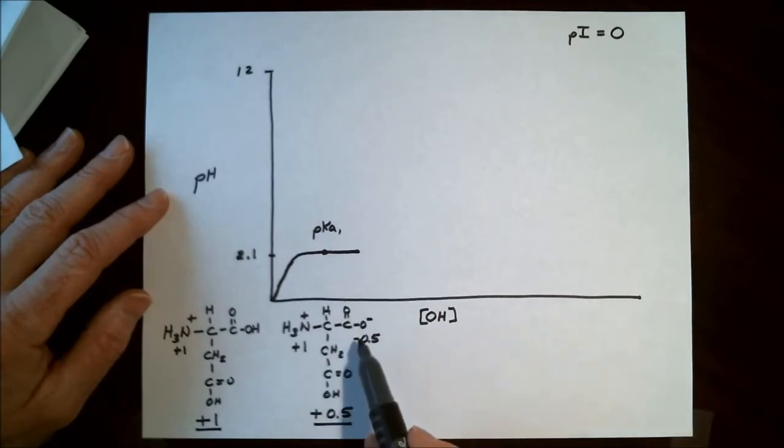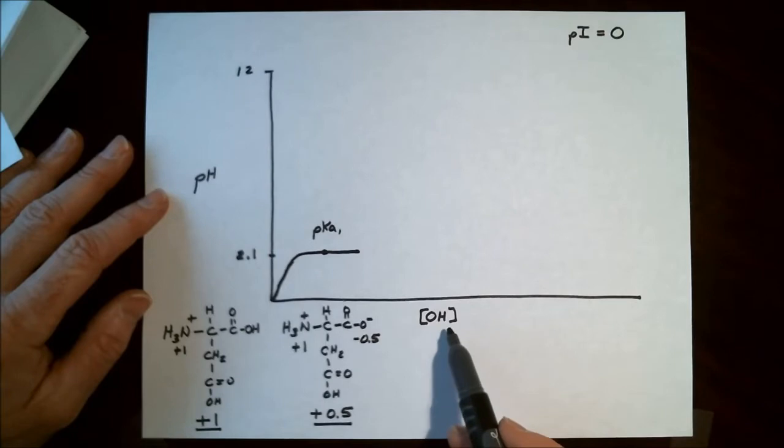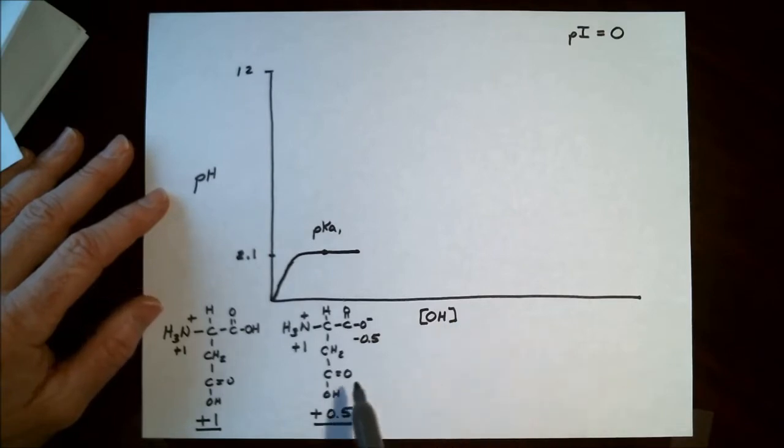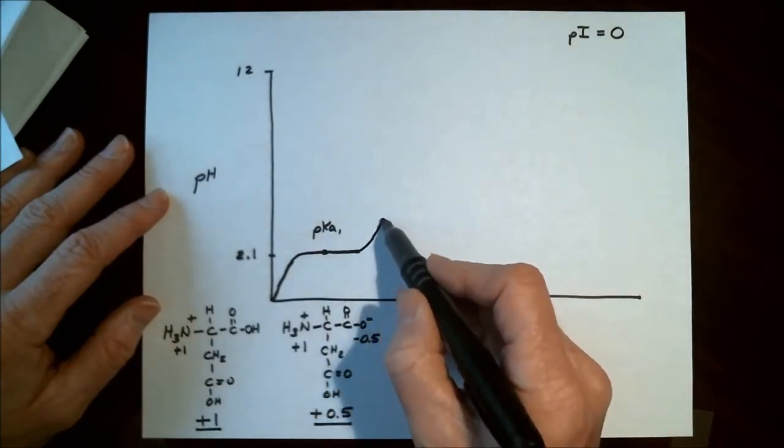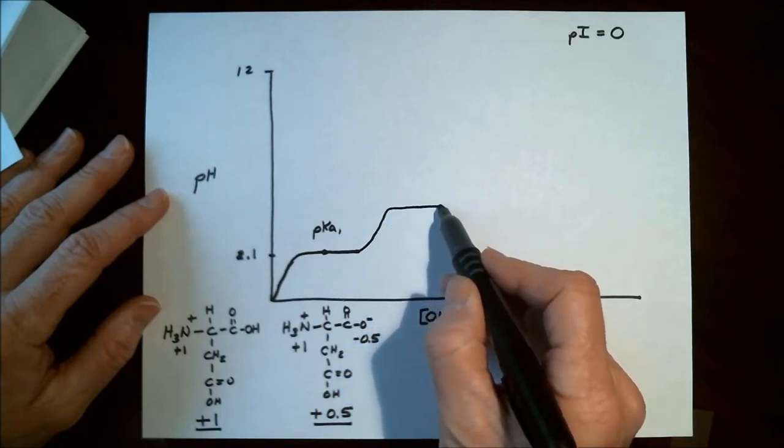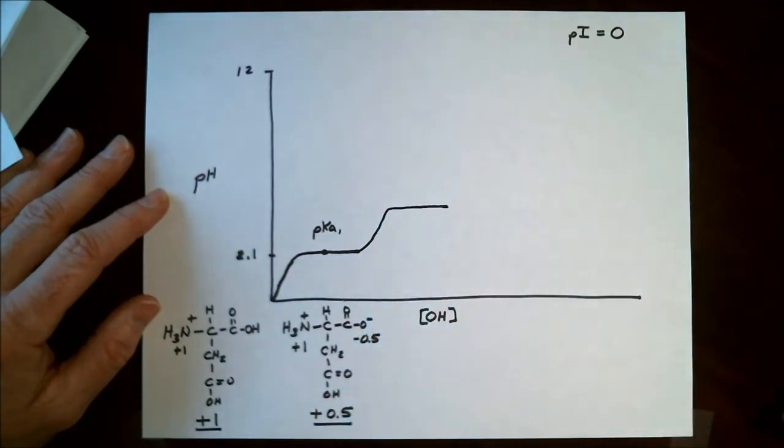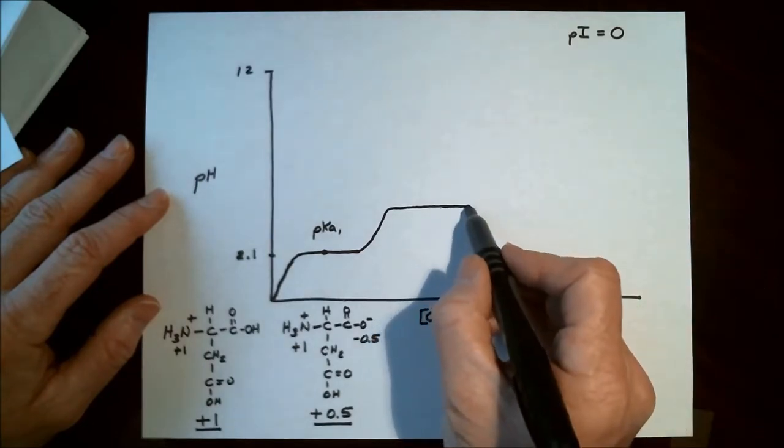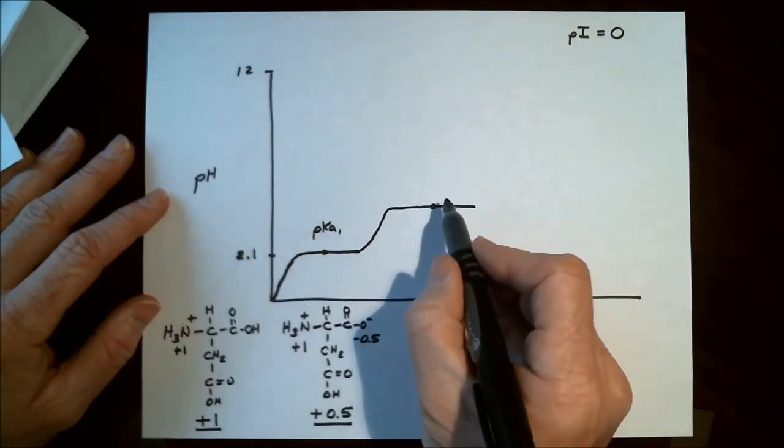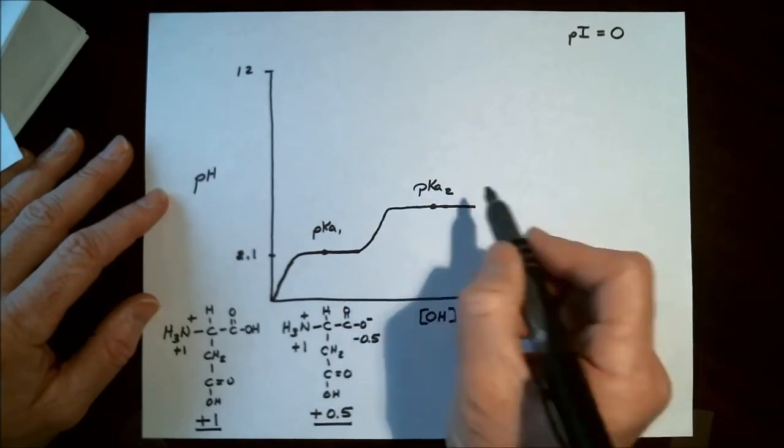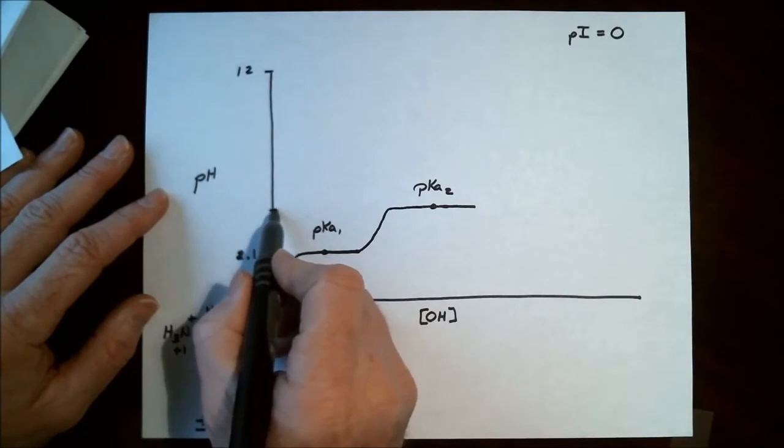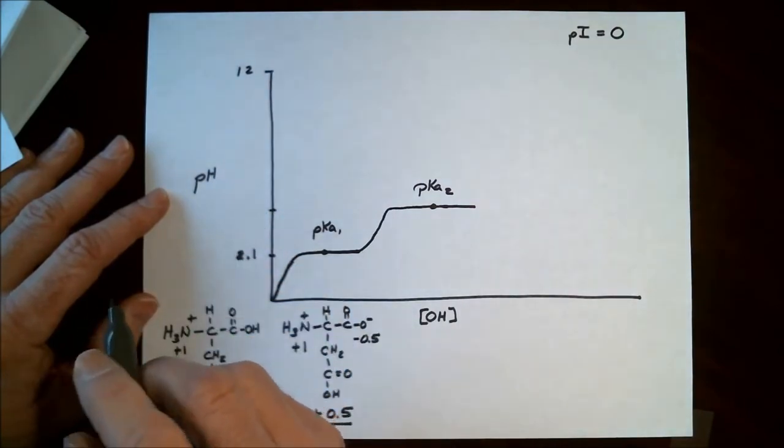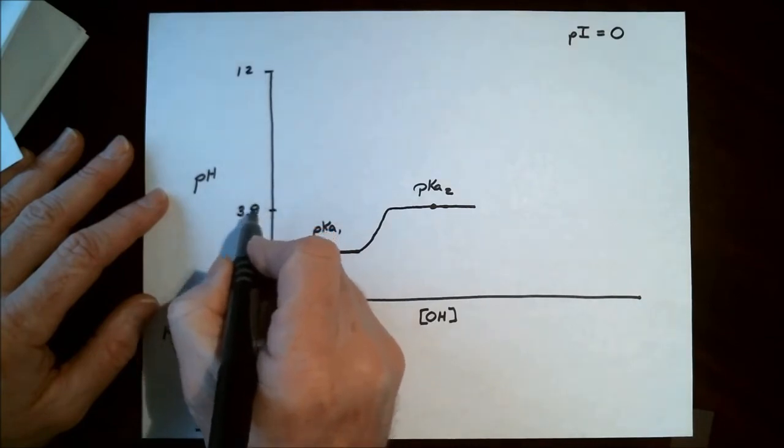Now once we increase our titration, continue our titration of the hydroxide ion, we will be leaving the buffering capacity of this particular functional group, and that means that the pH will start to climb again, until we get to the next buffering zone of a functional group. This is termed pKa2. And for aspartic acid, the second pKa is at pH 3.9.